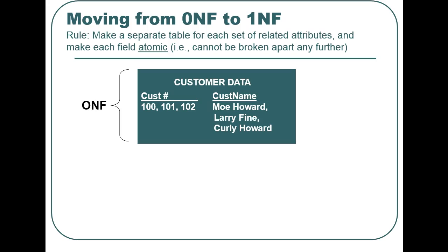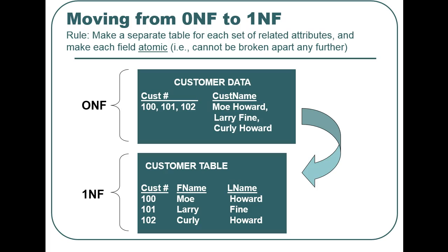In this example, the arrays of customer data have been placed into a table. Notice that customer name has been broken down into separate first and last name fields. These separate fields make the customer data atomic.